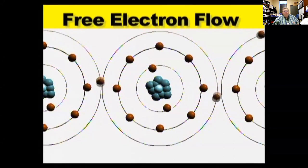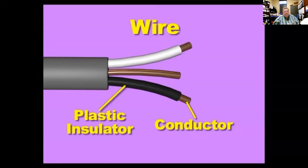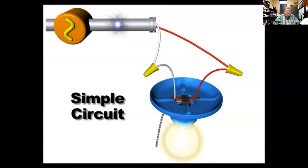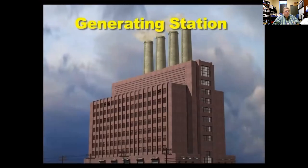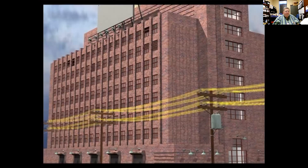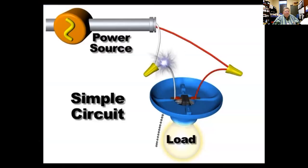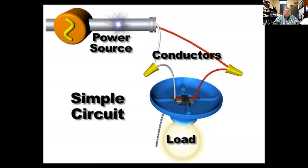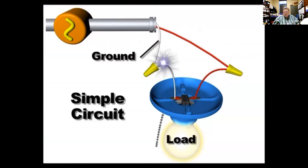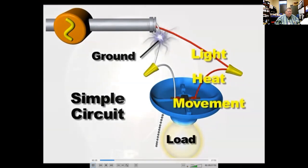Electricity is the flow of electrons through a conductor. A wire is a metal conductor usually enclosed in a plastic insulator — the metal wire conducts electricity and the insulation protects against shorting. A basic electric circuit consists of a power source (usually a generating station supplying AC electricity), a load (any electrical device such as a light bulb, motor, or heating element), and conductors such as wires that carry current between the power source and the load, and back to ground.